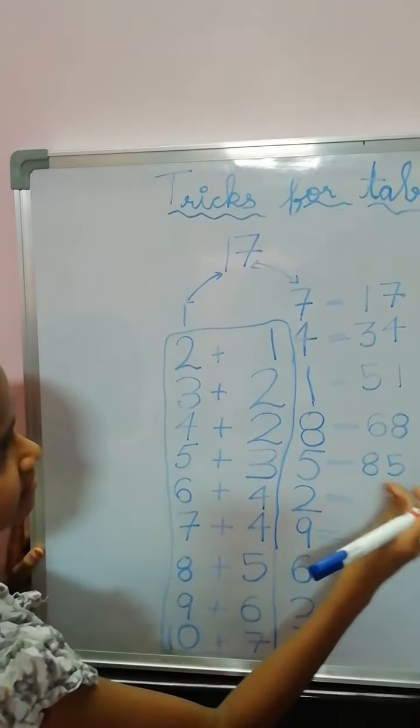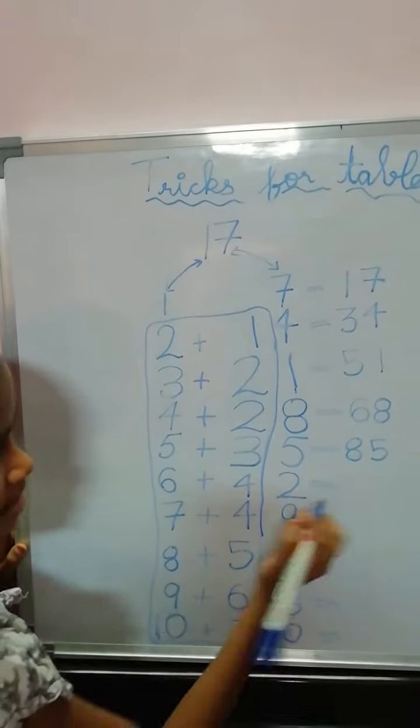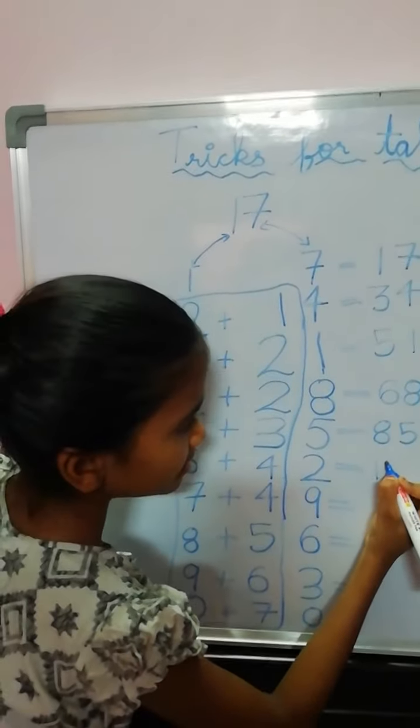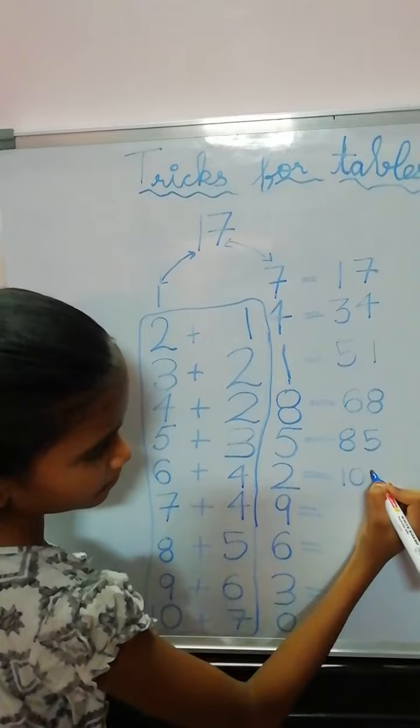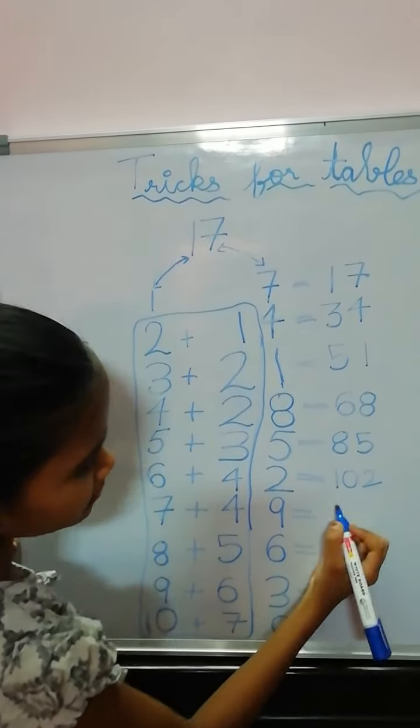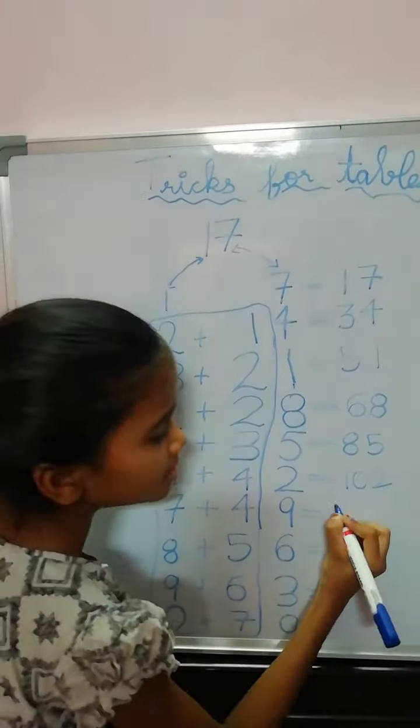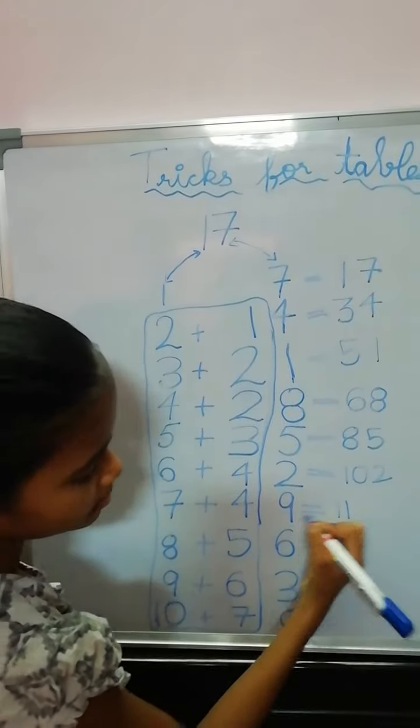5. 17, 5's are 85. 6 plus 4, 10, and 2. 17, 6's are 102. 7 plus 4, 11, and 9.